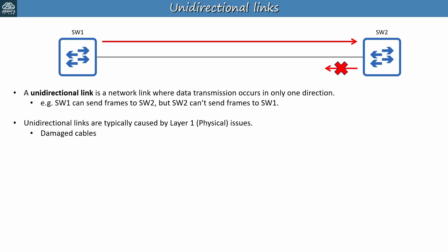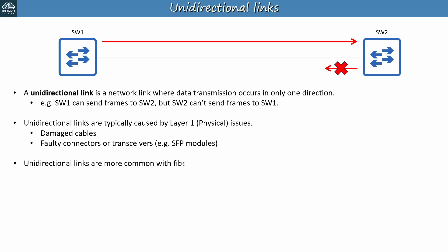For example, damaged cables could cause this, or faulty connectors or transceivers, such as the SFP — small form factor pluggable — transceivers used for fiber optic connections. In fact, unidirectional links are more common with fiber optic cables than copper UTP cables.